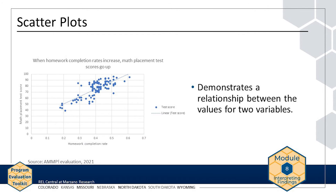A scatter plot demonstrates a relationship between the values for two variables. Dots represent the values obtained for the two variables, one plotted on the x-axis and one on the y-axis. Once all values are plotted, a trend line can be added to more clearly show the relationship between two variables or changes over time. A scatter plot can also show how closely grouped data points are and may highlight outliers in the data. In this example, homework completion rates are plotted in relation to AMP student scores on the high school math placement test. The trend line shows that as homework completion rates go up, math placement test scores increase.